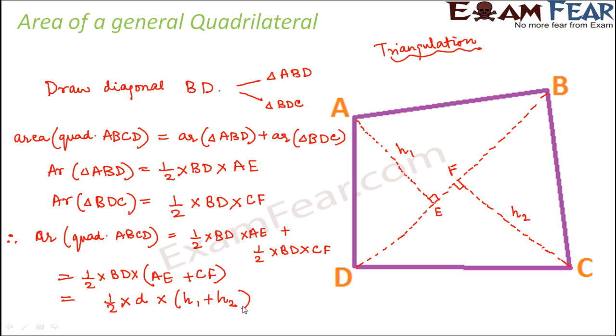Basically we find that area of any general quadrilateral is equal to half into product of the diagonal with the sum of the heights. So area of any general quadrilateral is equal to half into diagonal into sum of altitudes on the diagonal. Make sure that these altitudes or heights are the perpendiculars which are drawn on the diagonal from the opposite vertices.